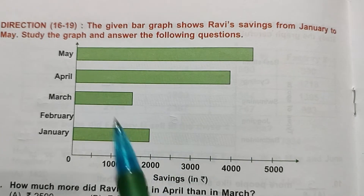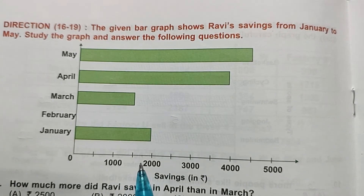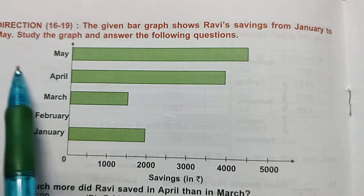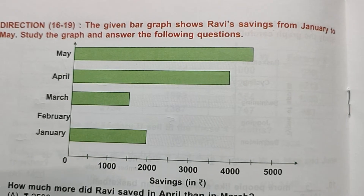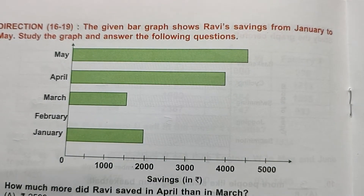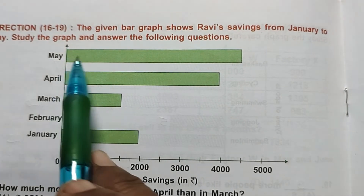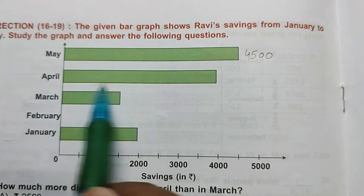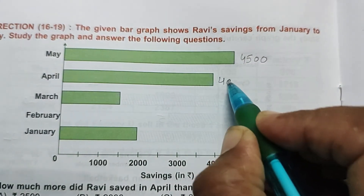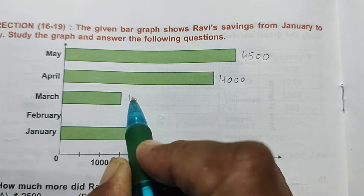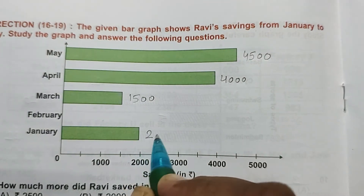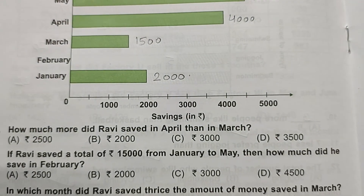Now the next bar graph is for questions 16 to 19. This bar graph shows Ravi's savings from January to May. May savings = Rs. 4500, April = Rs. 4000, March = Rs. 1500, January = Rs. 2000. February is not directly given.